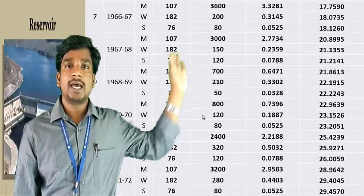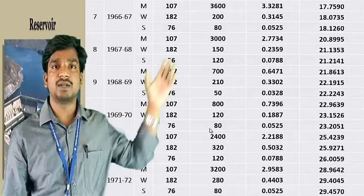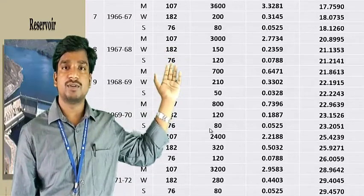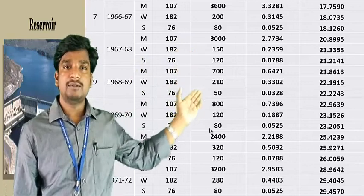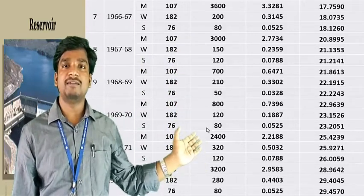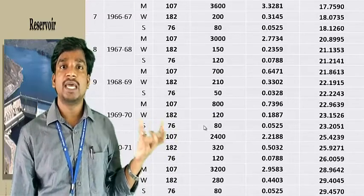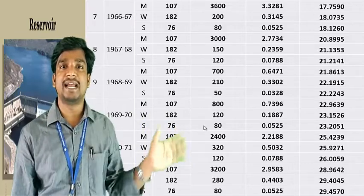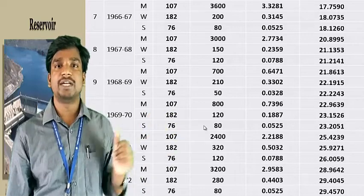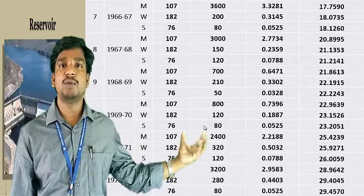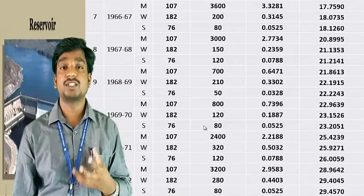We then calculate the accumulated values by cumulatively adding each converted volume. The first value is 0.9707, and for each subsequent entry we add the previous accumulated total. At the end of the year 1971–72, the final accumulated inflow is 29.4570 million hectometers. This represents the total volume of water accumulated over the 12-year period.